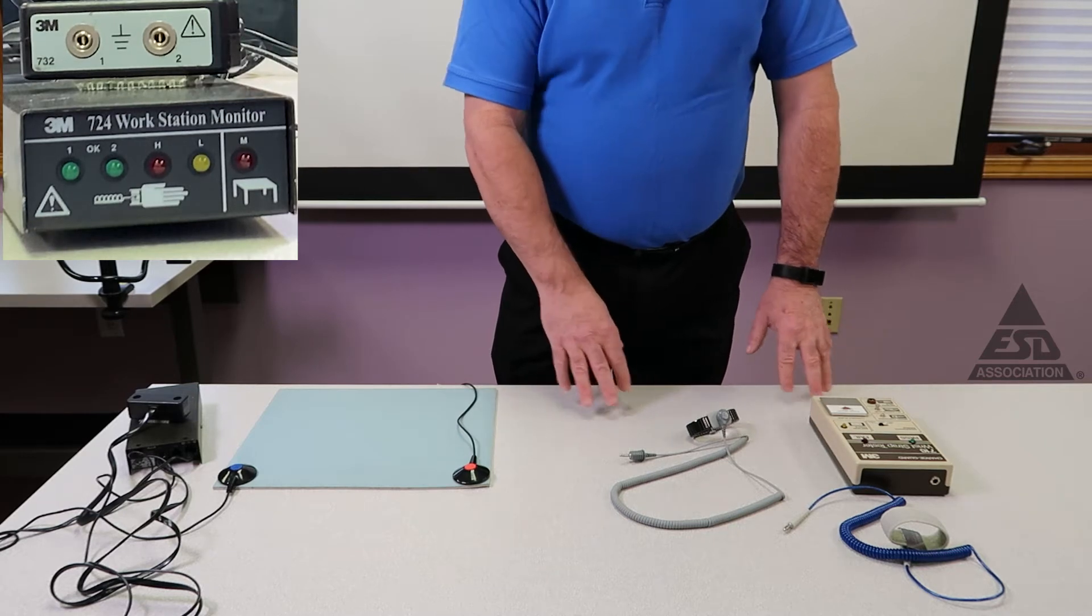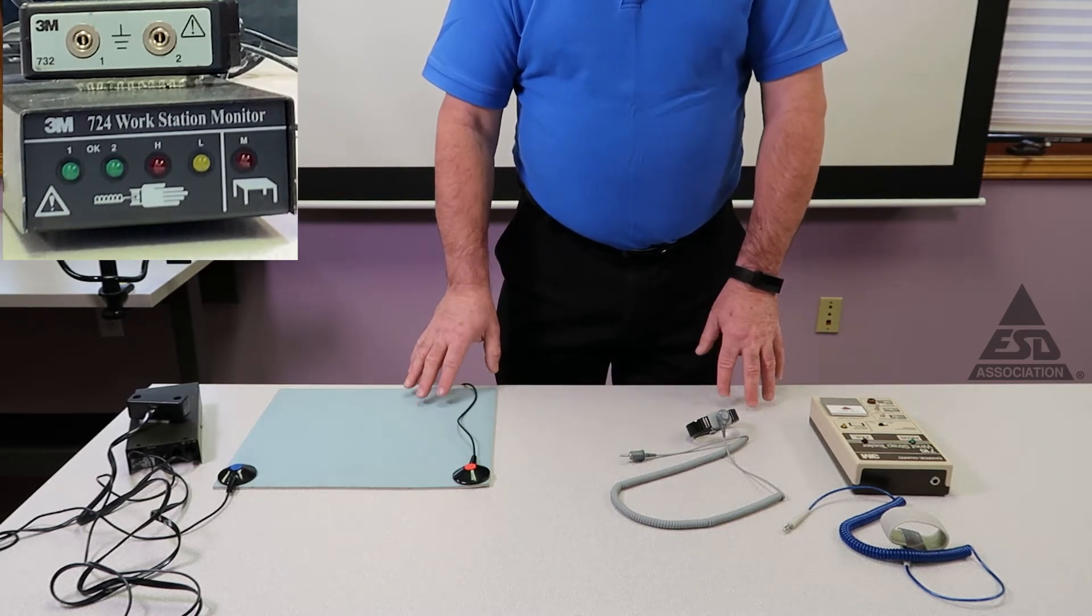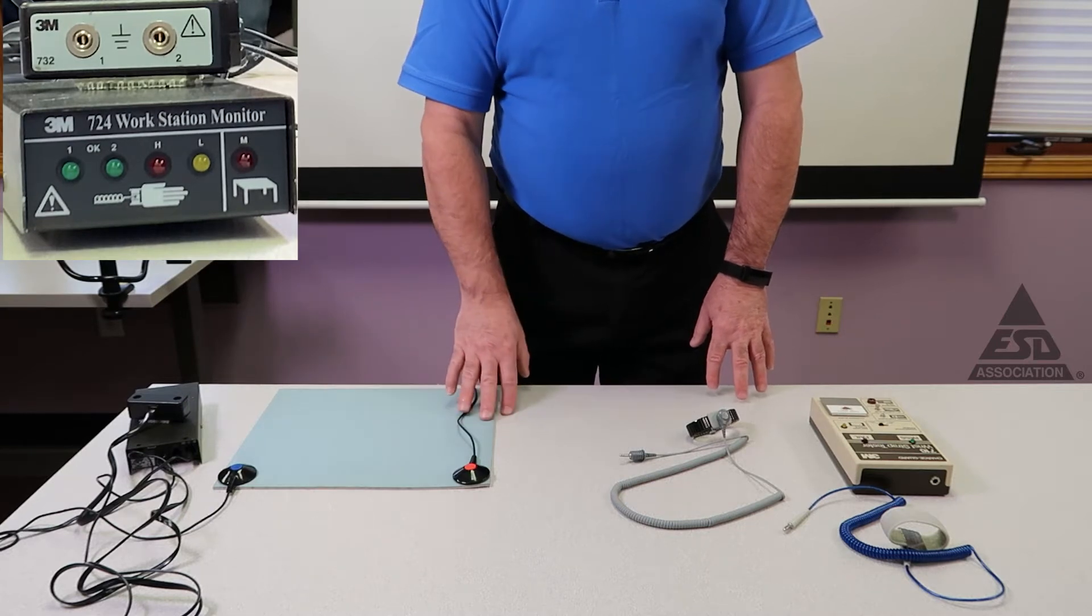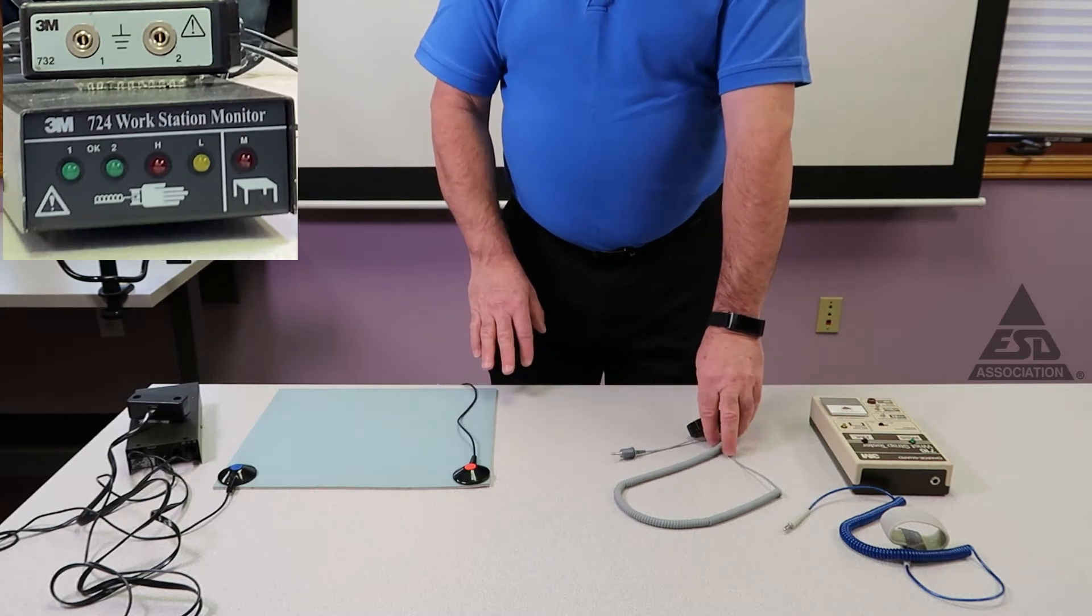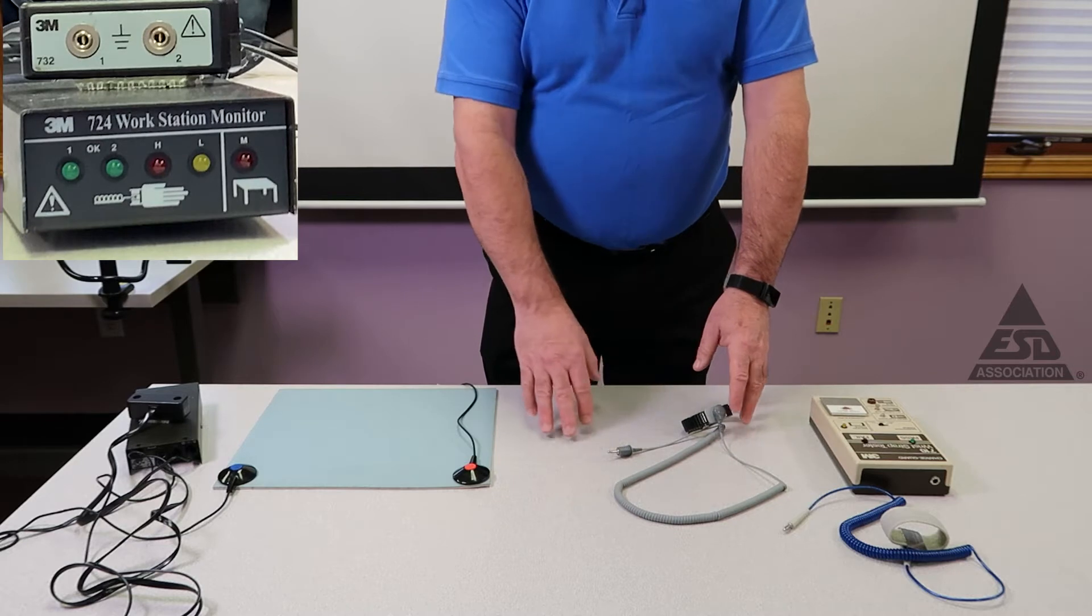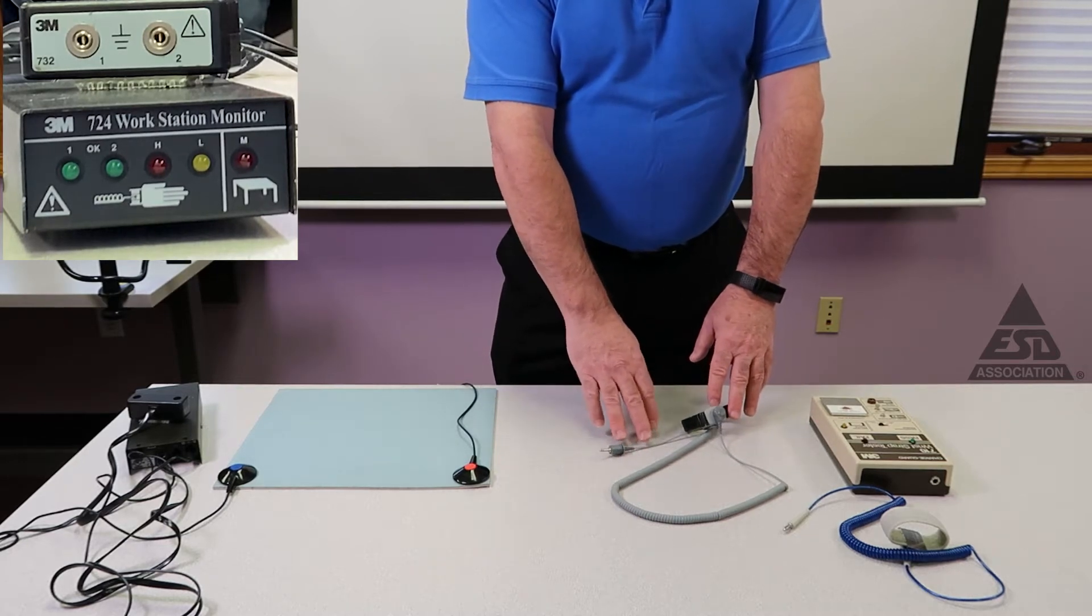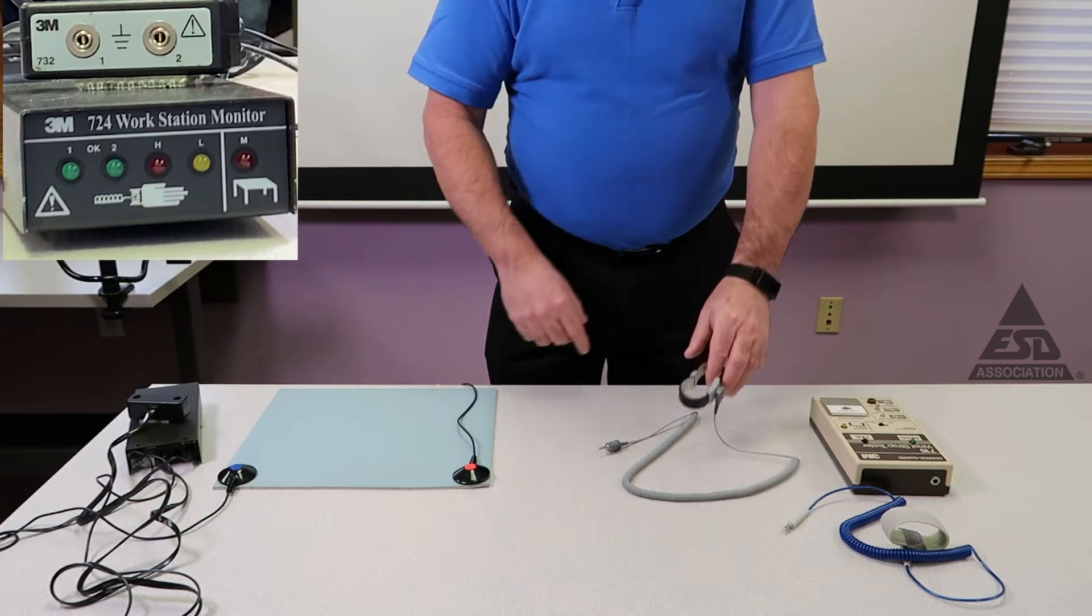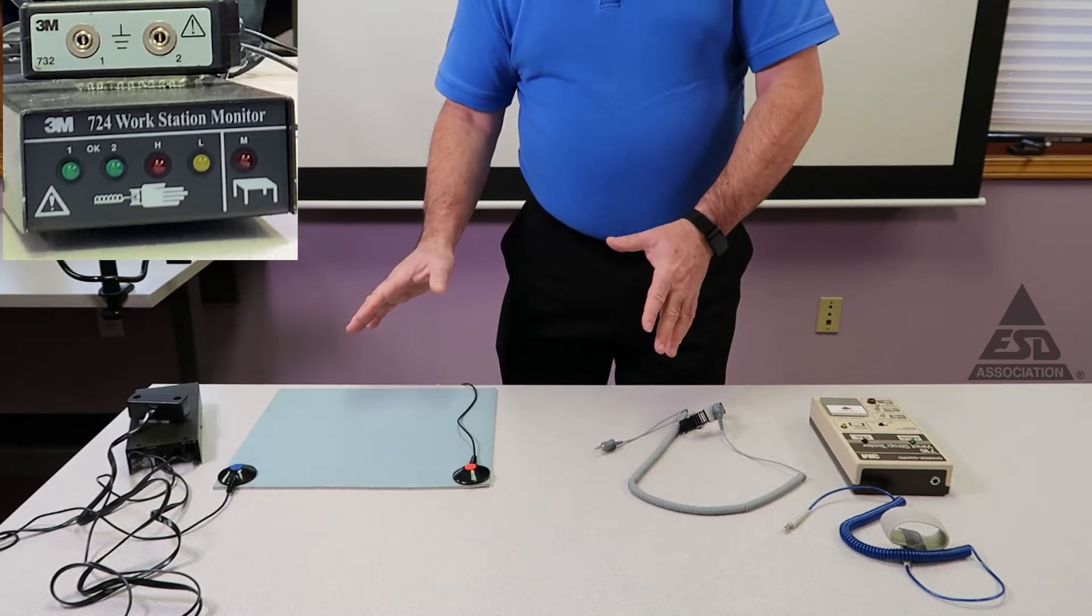We tested our daily wear wrist strap. Now we're going to do a continuous monitor. This continuous monitor does a couple of things. It monitors the ground connection through the mat, and it will also monitor our wrist strap. This particular setup uses a resistance type, so this wrist strap actually has a split in it and it measures the resistance across it when it's working. But first, let's look at the workstation monitor.